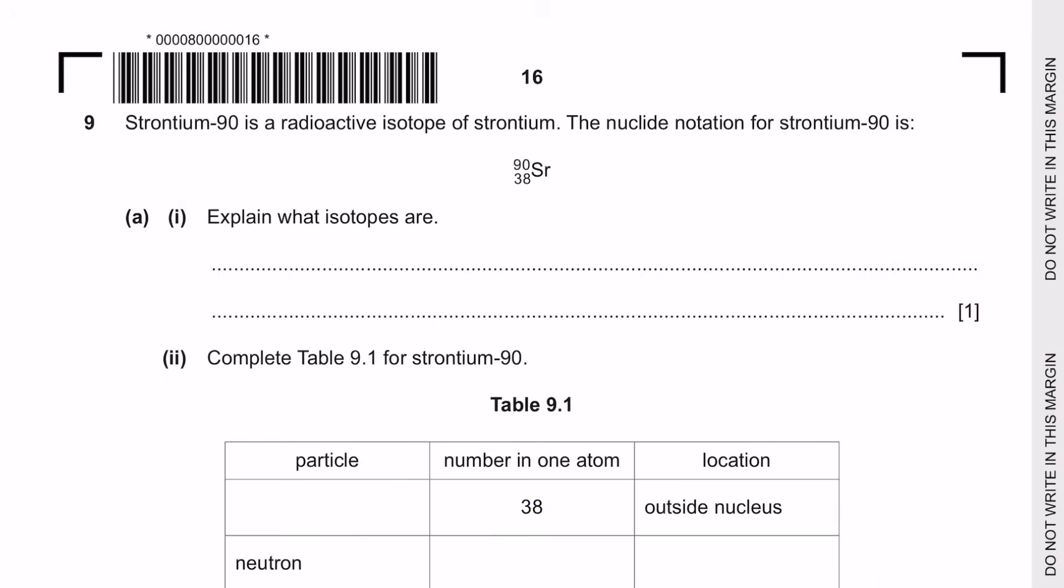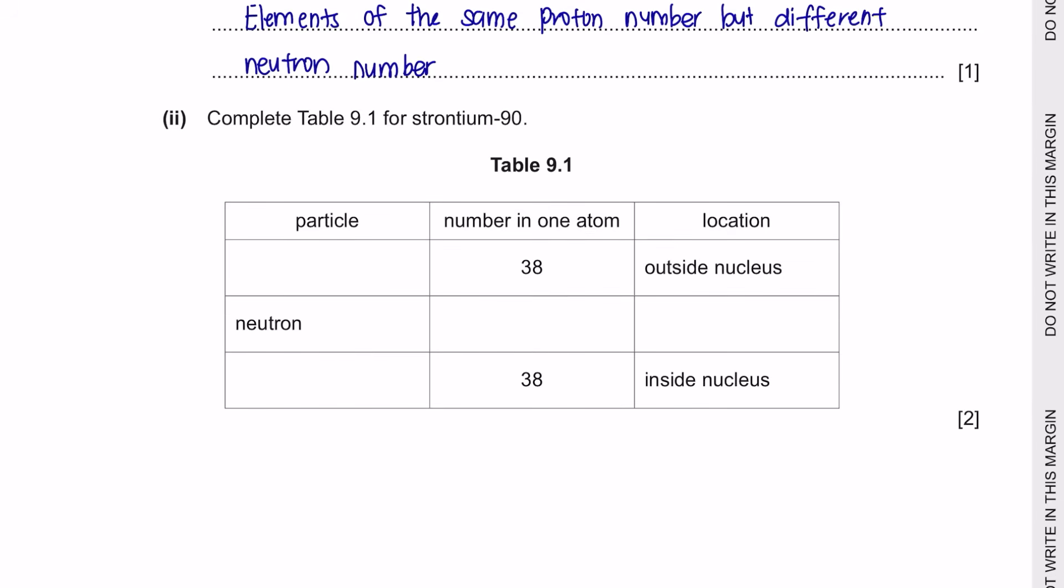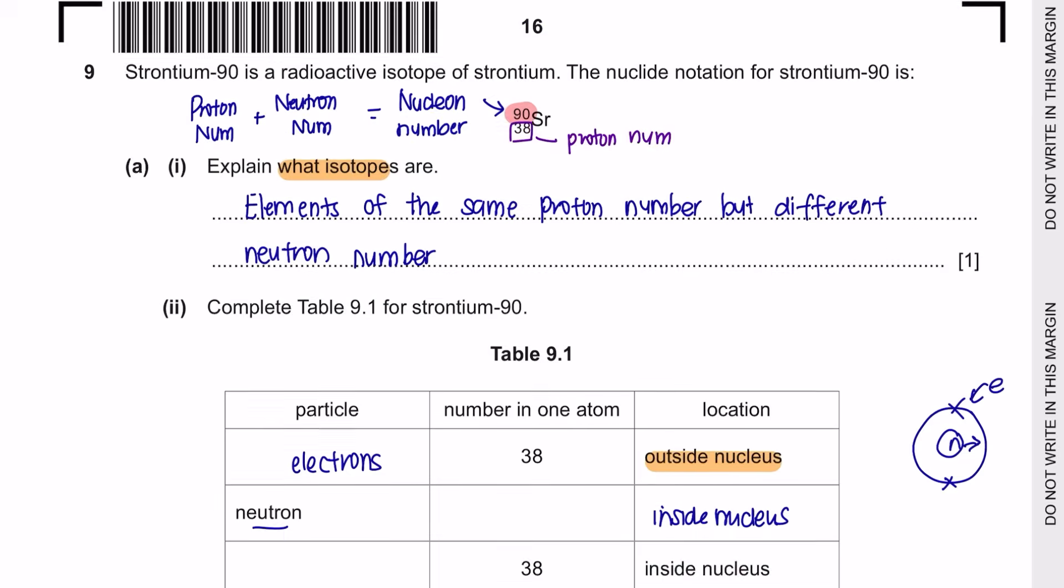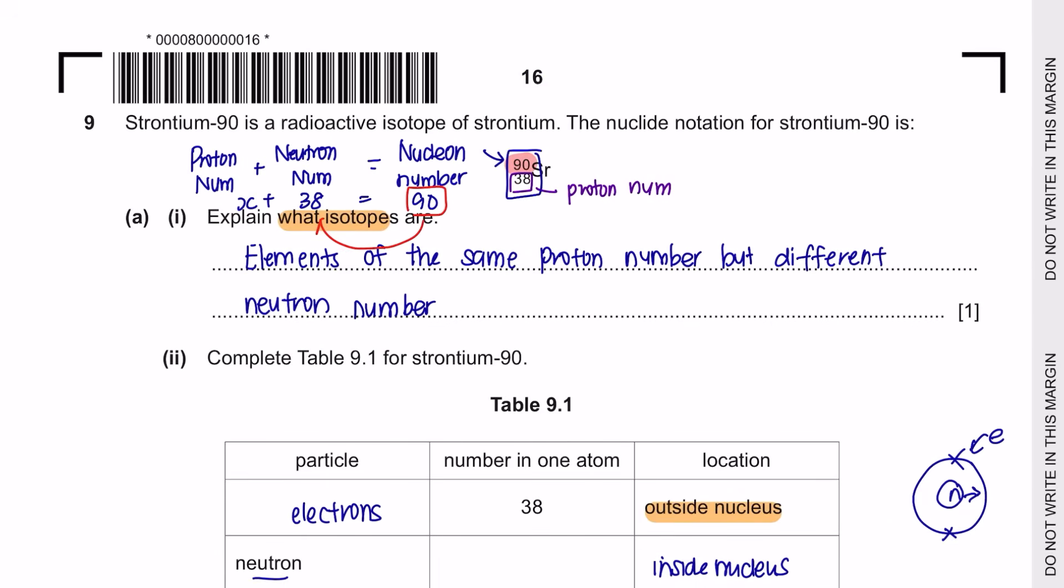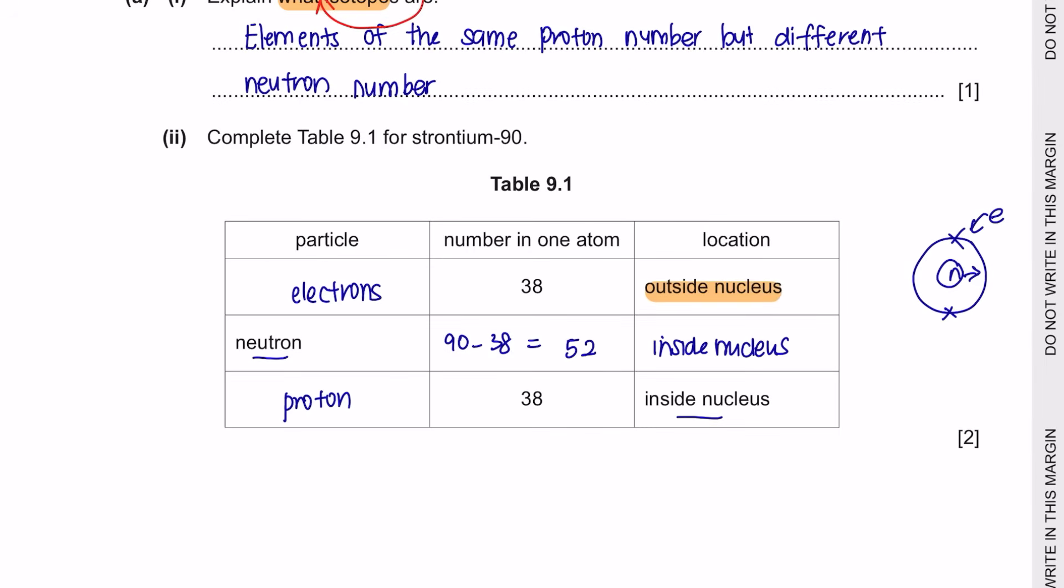Next question 9. Strontium-90 is a radioactive isotope of strontium. The nuclide notation for strontium-90 is 90 on the top which represents the nucleon number. Nucleon number is proton number plus neutron number in the nucleus of an atom. And at the bottom here is our proton number in the nucleus of an atom. Question A part 1. Explain what isotopes are. Isotopes are elements of the same proton number but different neutron number. Question part 2. Complete Table 9.1 for strontium-90. If it's outside of the nucleus, then the particles would only be electrons because electrons are placed on the shell of the atom which is outside of the nucleus. And the next you've got neutrons. Neutrons can be found inside of the nucleus. And the number of neutrons in this atom can be found by using the nucleon number minus the neutron number which is 52. And another particle that can be found inside the nucleus and has 38, it would be the particle of proton.